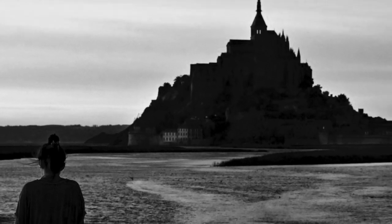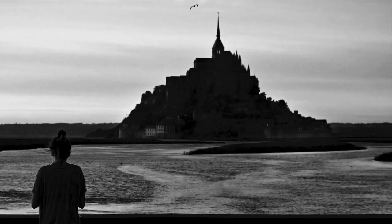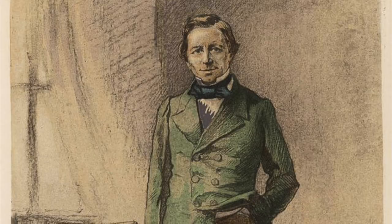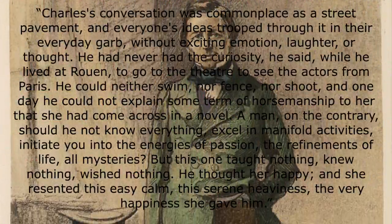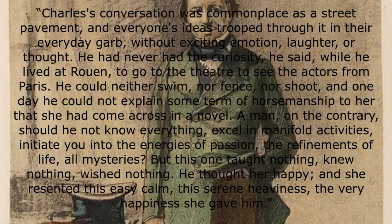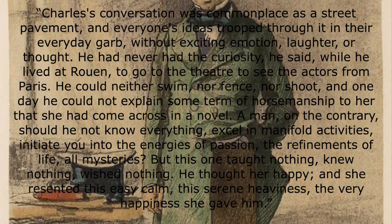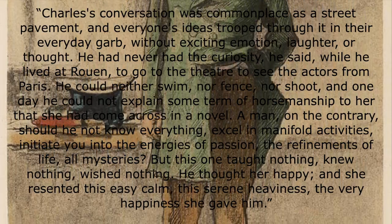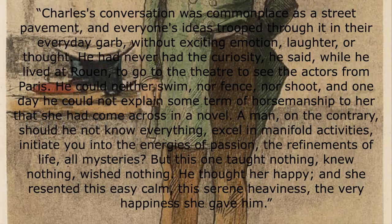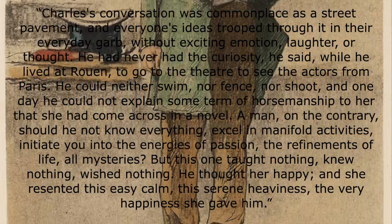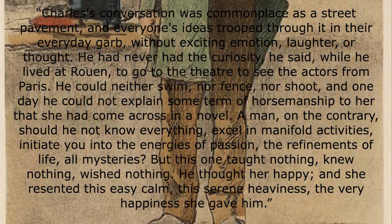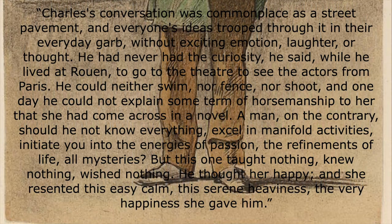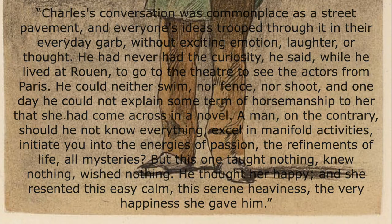Emma realises that this is not what she expected of marriage. She imagined unicorns, fantastic balls, knights in shining armour — but she is stuck in a tiny town with a boring doctor who always smells of disinfectant. Flaubert tells us: 'Charles' conversation was commonplace as a street pavement. He had never had the curiosity to go to the theatre. He could neither swim nor fence nor shoot. A man, on the contrary, should he not know everything, excel in manifold activities, initiate you into the energies of passion, the refinements of life, all mysteries. But this one taught nothing, knew nothing, wished nothing. He thought her happy. And she resented this easy calm, this serene happiness she gave him.'